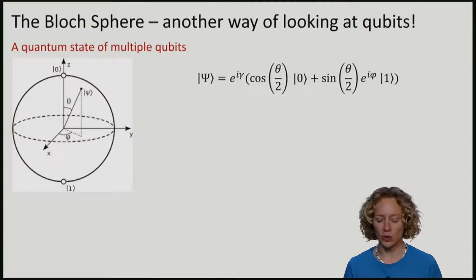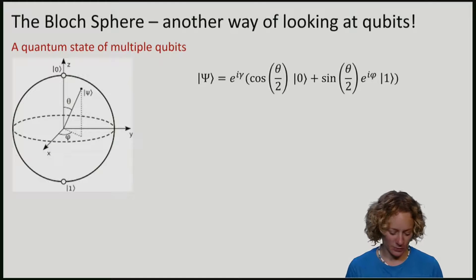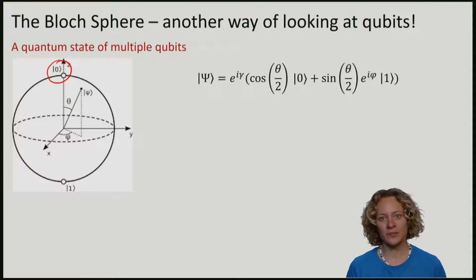It only works for one qubit and not for many. Let's imagine that instead of using the standard basis, 0 and 1, we associate the 0 to the up direction and the 1 to the down direction.